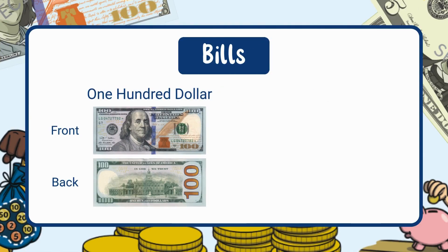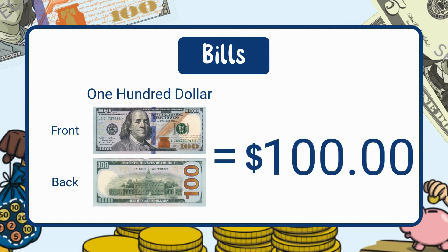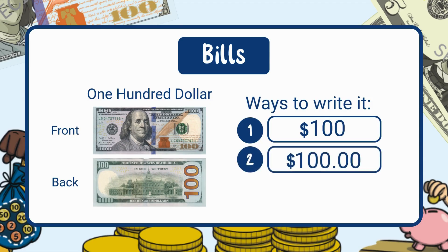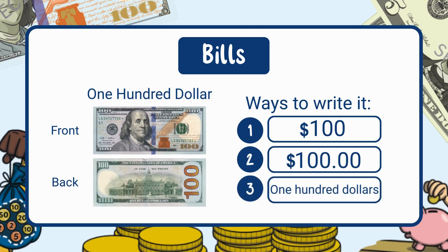And finally, we have the biggest bill most people use — the hundred dollar bill. It's worth one hundred dollars. Ways to write it: standard form, one hundred dollars; decimal form, one hundred dollars; written form, one hundred dollars.